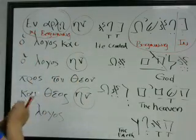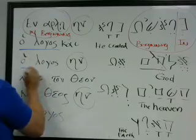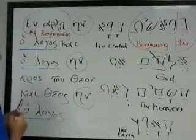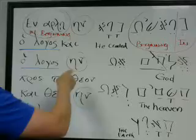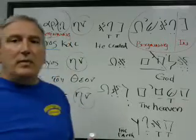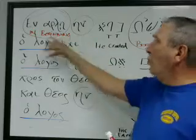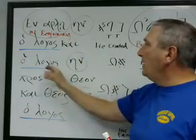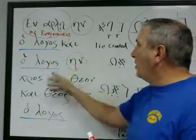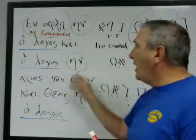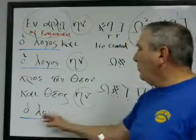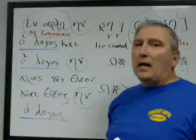He has logos, the logos, the logos, the logos. Very fascinating here because this word was is in perfect tense, meaning past, ongoing, continuous action. So the word was always being in beginning. The word, and the word was always being toward the God in beginning. And the word, the logos, was always being God.